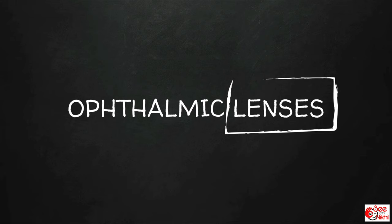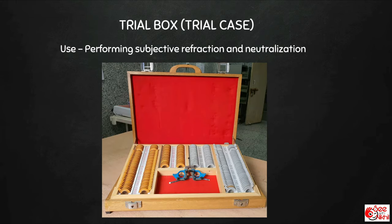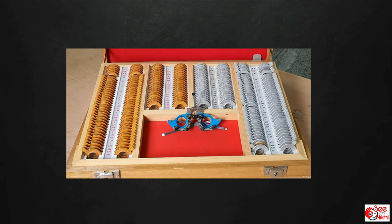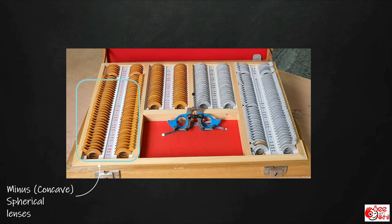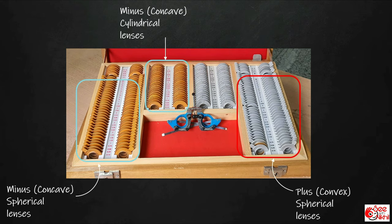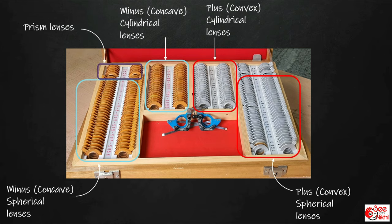Let's talk about Ophthalmic Lenses first. This is a trial box or trial case in which ophthalmic lenses used for performing subjective refraction and neutralization are kept. It has various sections for minus spherical lenses, plus spherical lenses, minus cylindrical lenses, plus cylindrical lenses, prism lenses, accessory lenses, and a trial frame.